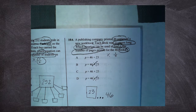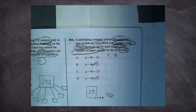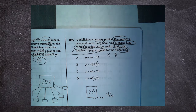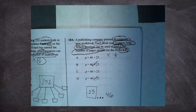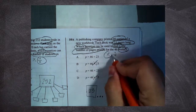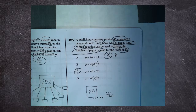So if they keep on printing pages and pages and pages, making books and books and books, is the number of pages going to go up or is the number of pages going to go down? The number of pages is going to go up. So what operation should I use? Multiplication. It means that I should pick answer choice C.